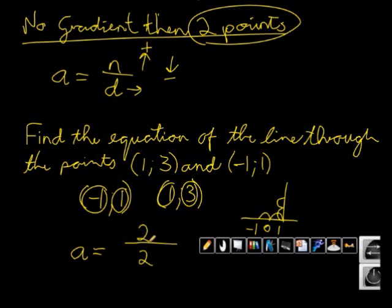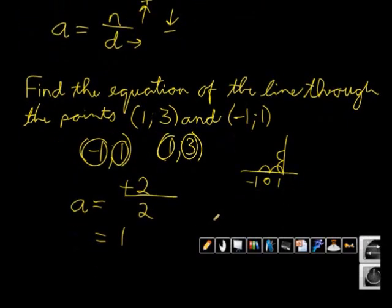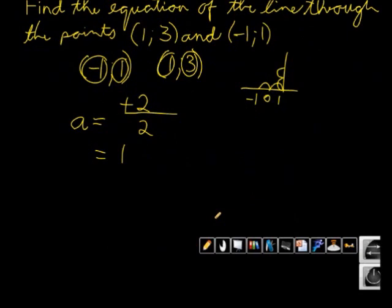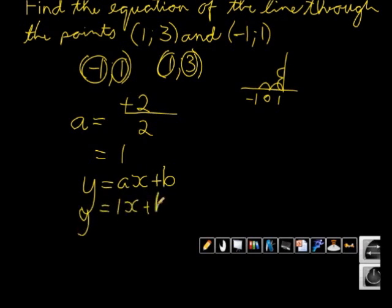And because it was up, it went from 1 to 3, not from 3 to 1, it is a positive. And that means my gradient is equal to 1. Which means in my equation, y is equal to ax plus b, I will find that a is equal to 1x plus b.